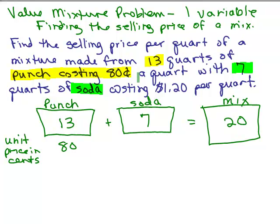What about the soda? So it says I've got 7 quarts of soda costing a dollar 20 per quart. Now, this is given in dollars and cents, a dollar 20. We did the unit price in cents, so instead of writing 1.20, we're just going to write 120.